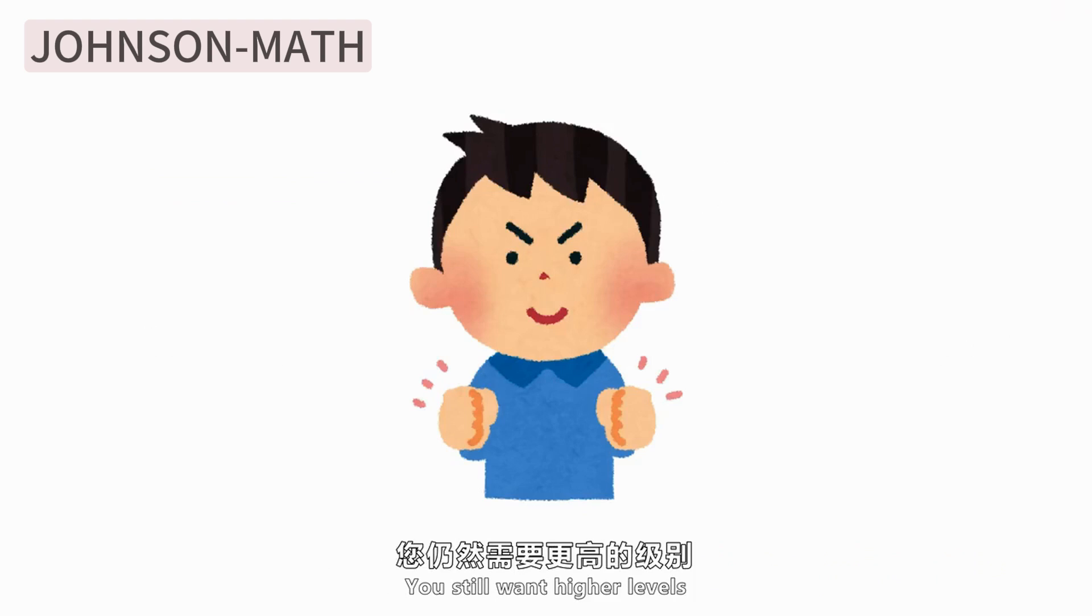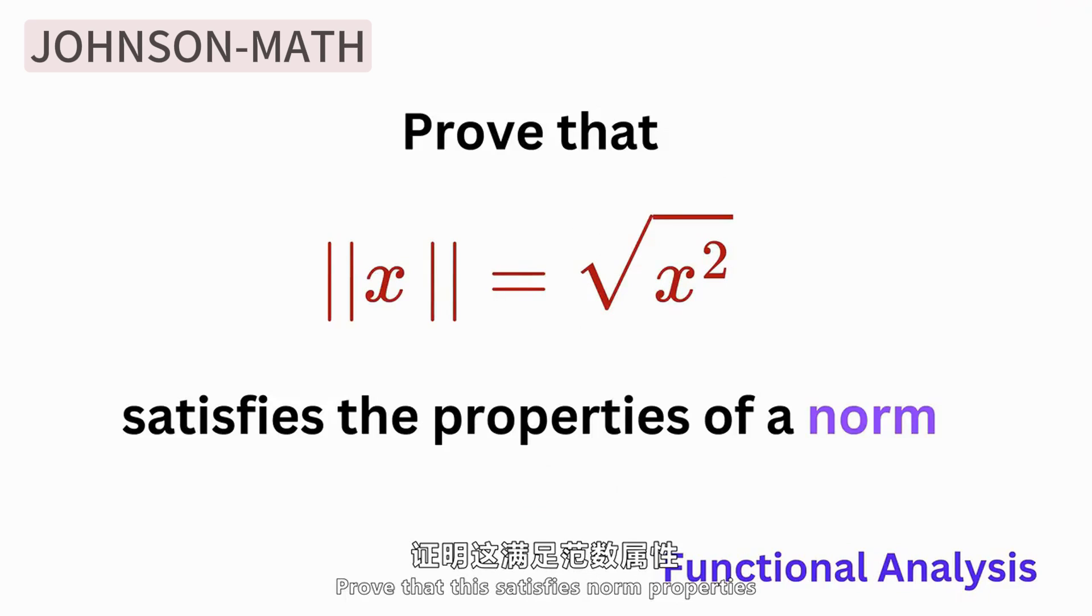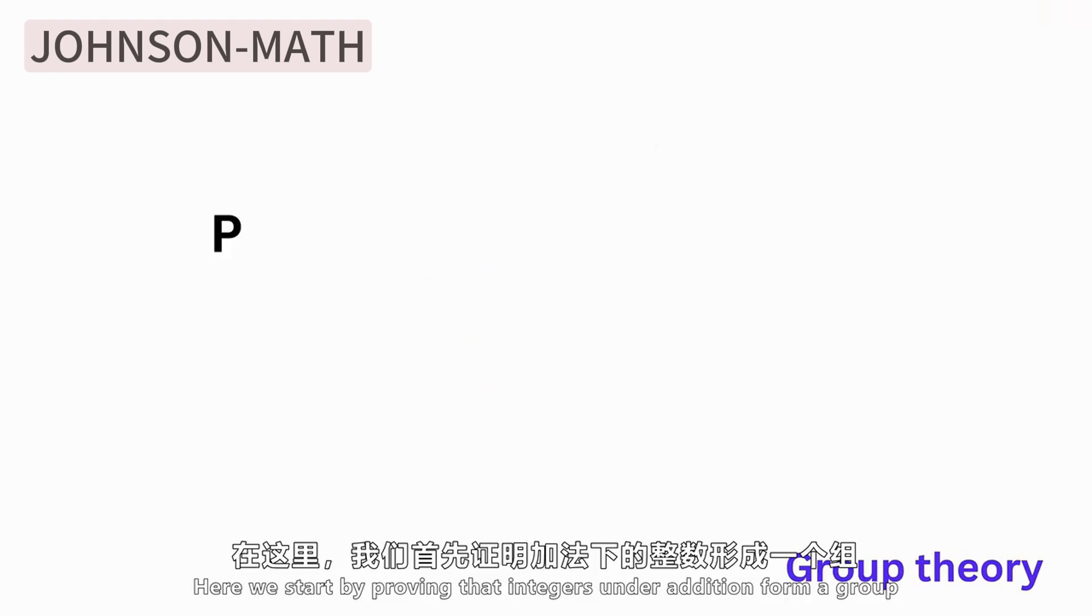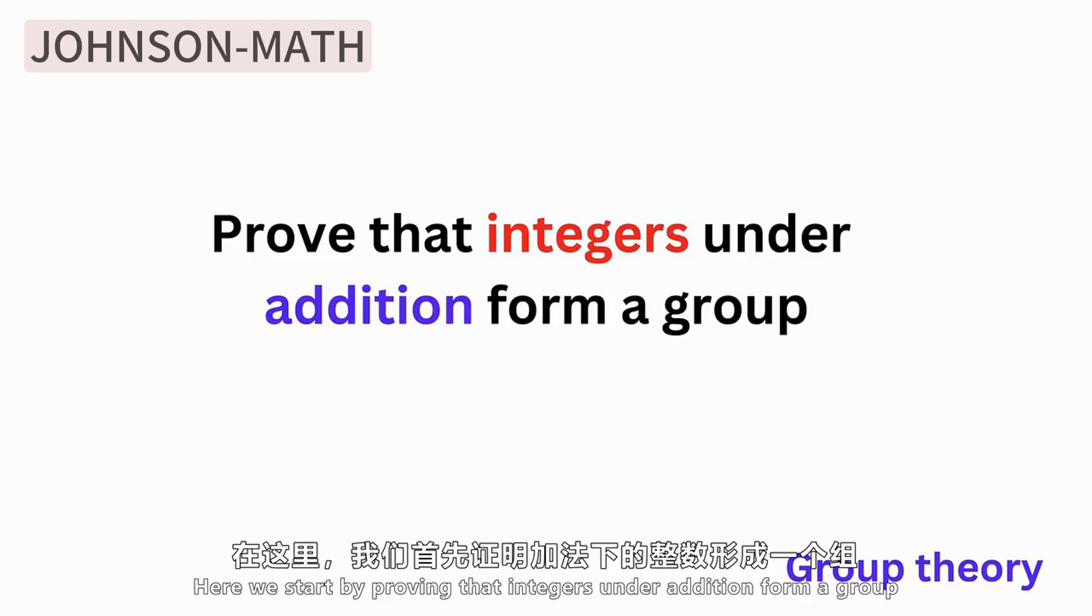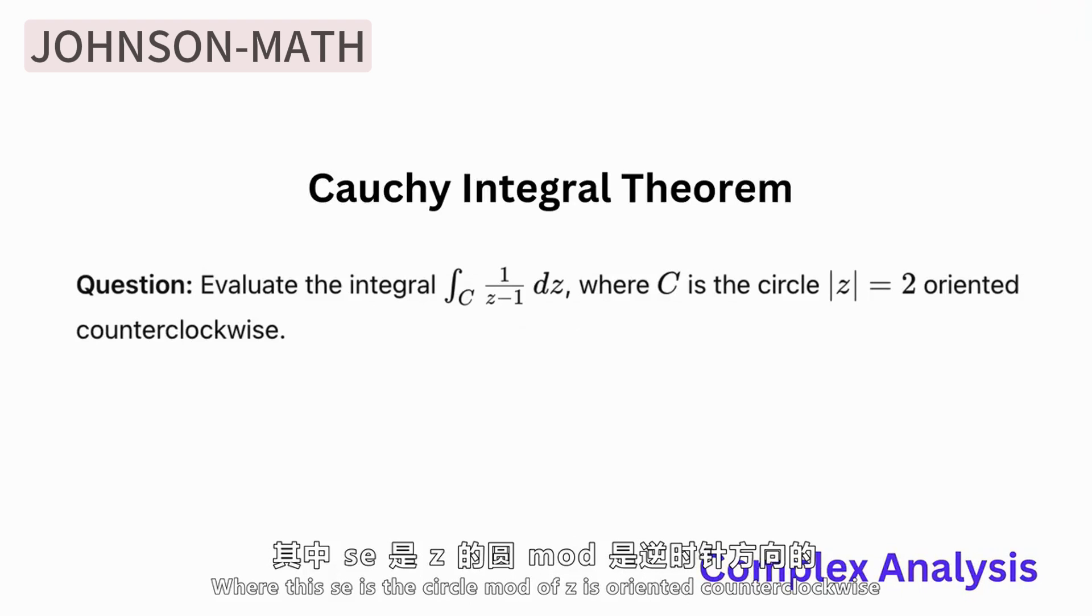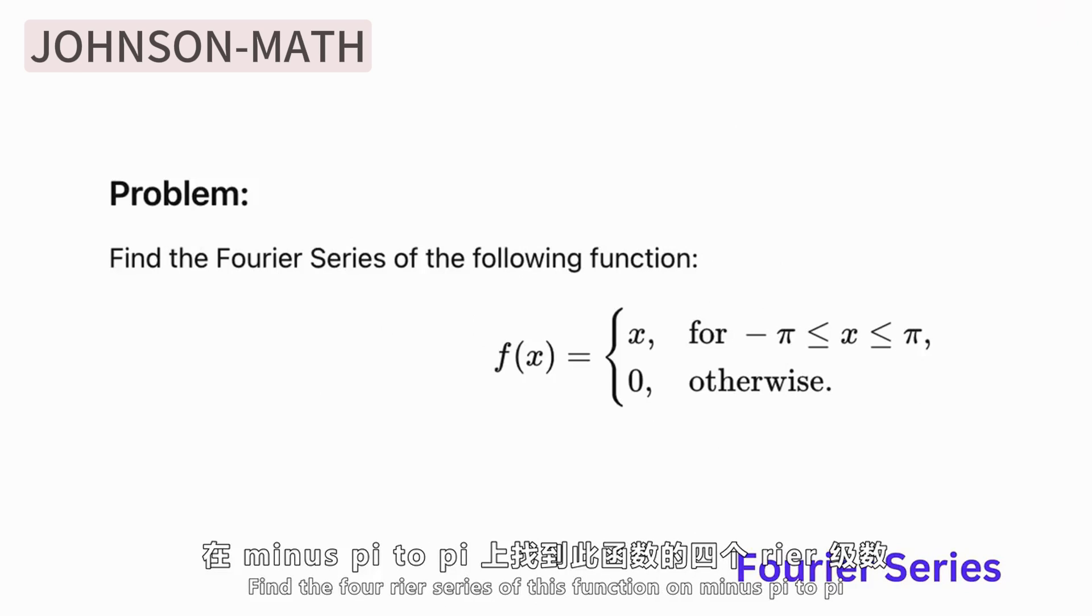Do you want a higher level? Then it is Level 41 now. In functional analysis, prove that this satisfies the norm property. In Episode 42, we have group theory here. We start by proving that integers form a group under addition. Now in Episode 43, use the Cauchy integral formula to calculate this integral, where C is based on counterclockwise, a positive circle on the complex plane. Level 44 involves complex Fourier series. Find this function's complex Fourier series on negative pi to pi.